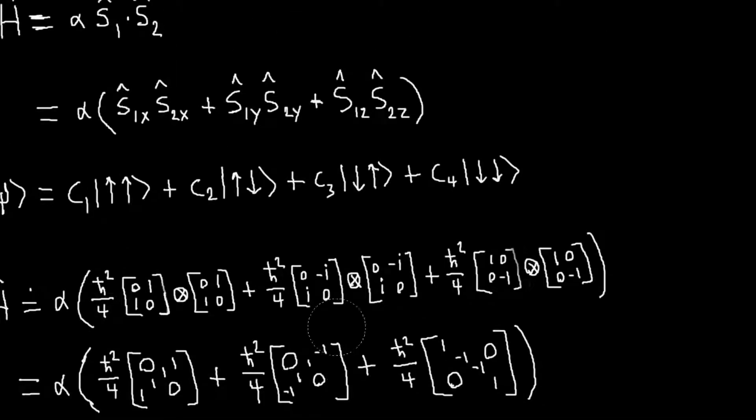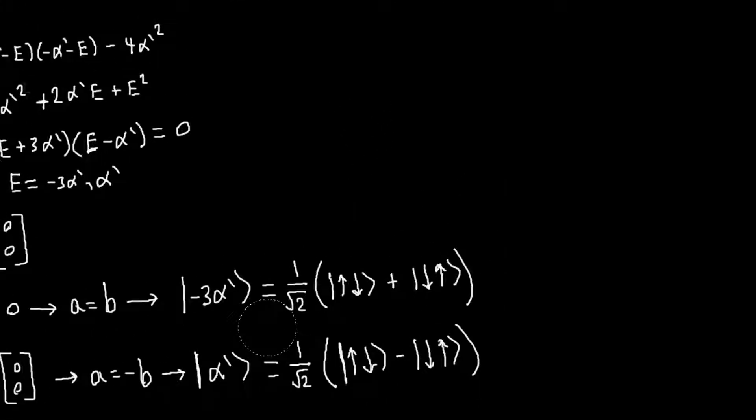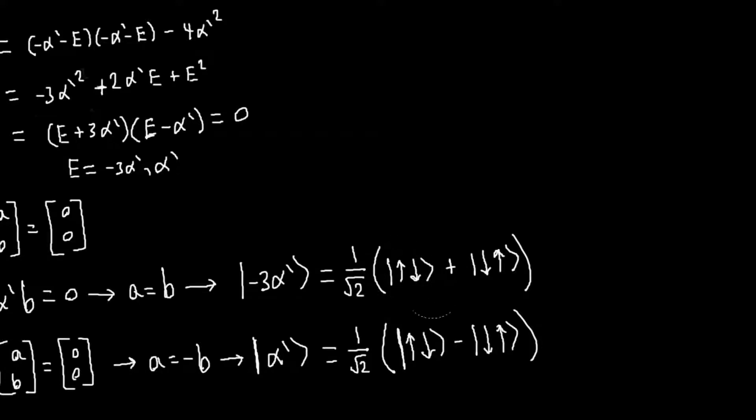And again, if you had initially your state vector expanded like this, what you would have to do is rewrite these two vectors in terms of the eigenvectors of the Hamiltonian, which you can do because we have these relations down here. So you can just invert these and write these up-down and down-up states as linear combinations of our two eigenvectors.